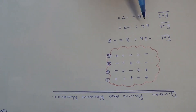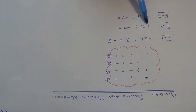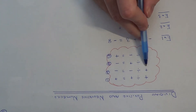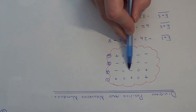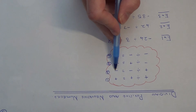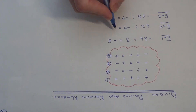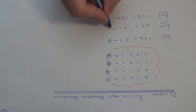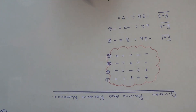Let's move on to example 2. This time we have positive 42 divided by minus 7, so we're dividing a positive number by a negative number. Looking at our four rules, a positive divided by a negative will give a negative answer, so we know it's going to be minus something. We just need to work out 42 divided by 7, which gives us 6. So our final answer is minus 6.